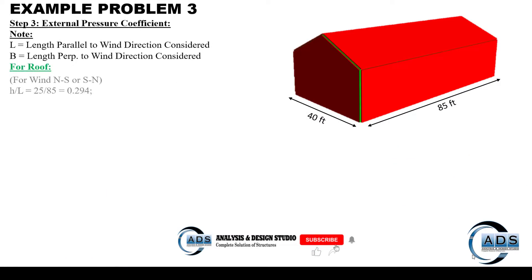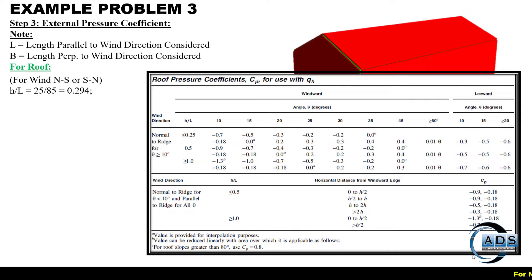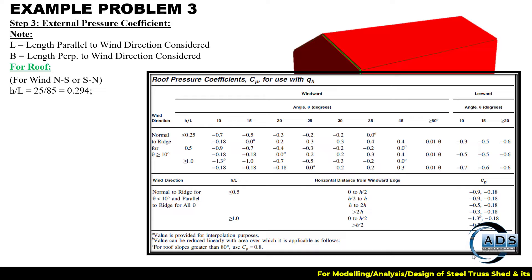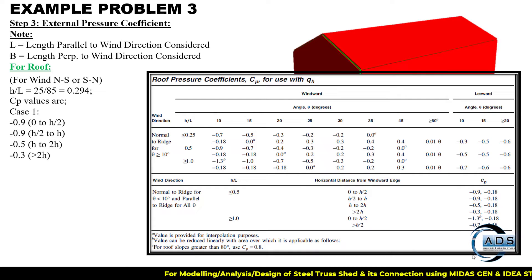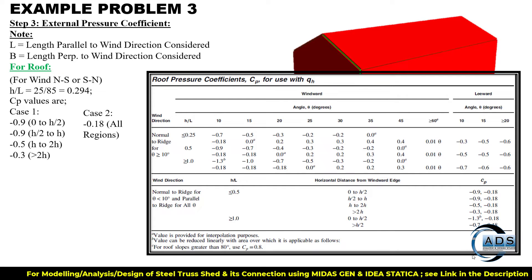For the north-to-south or south-to-north direction, h over L is 0.294. Since we are calculating the Cp value for wind parallel to the ridge, we have four region-wise Cp values, as in the previous examples.